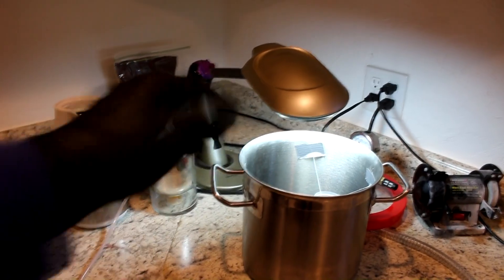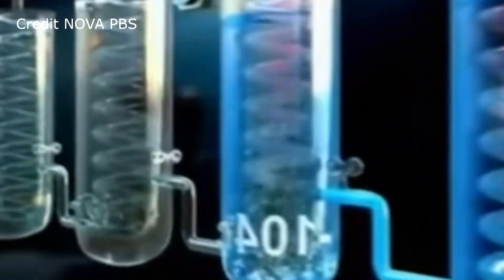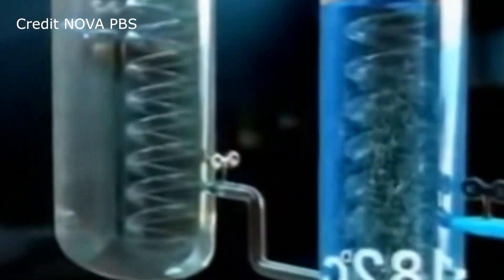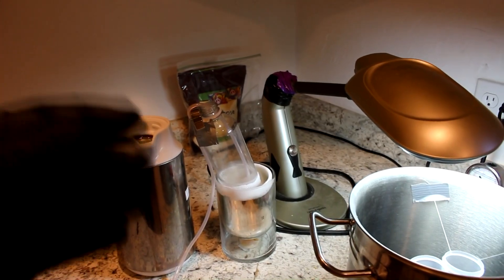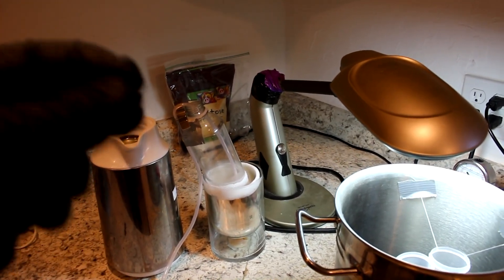Hi everyone, welcome back to Cody's Lab. So James Dewar, when he was making liquid hydrogen, he used a bath of liquid oxygen as a coolant. Now this seems kind of strange because liquid hydrogen and liquid oxygen combine to make rocket fuel.